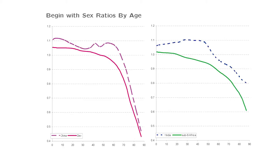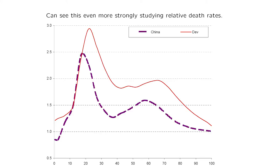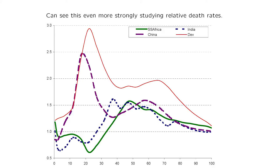If you look at the relative death rates, you see the difference more strongly. This is relative male-to-female death rates by age. In developed regions you see a lot of excess male mortality. China follows a similar relationship, more biased at birth. But for India or Sub-Saharan Africa, you see the absolute opposite — tons of excess female mortality. These two groupings made more sense rather than the China-India grouping.